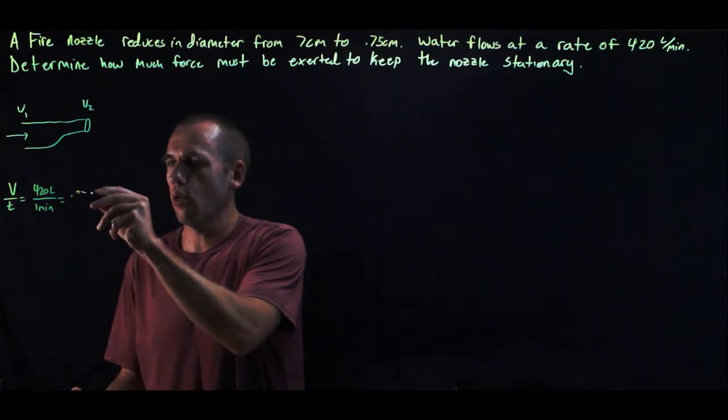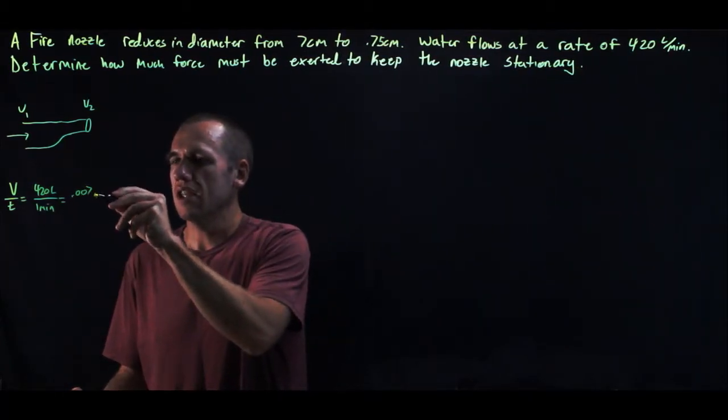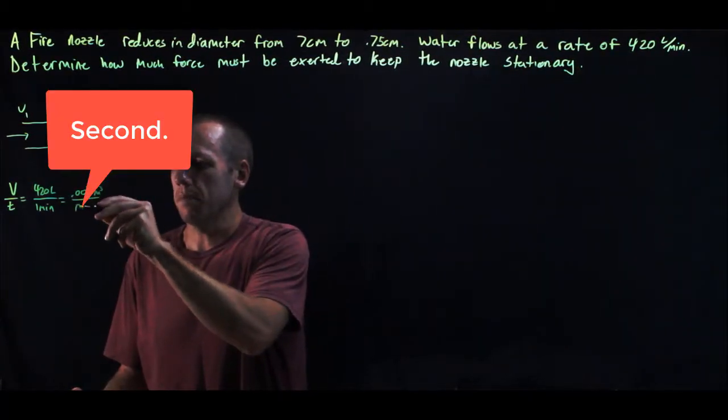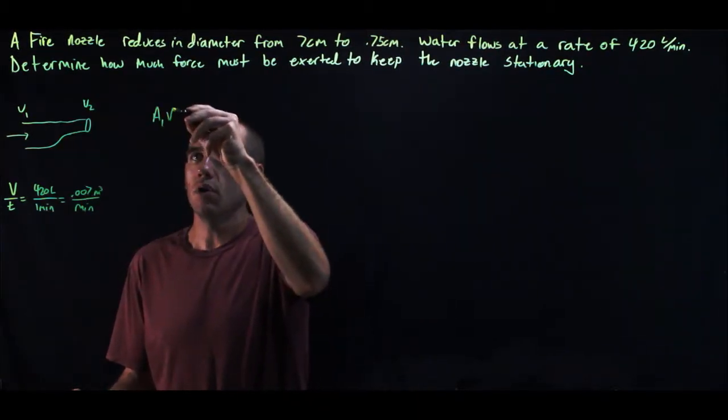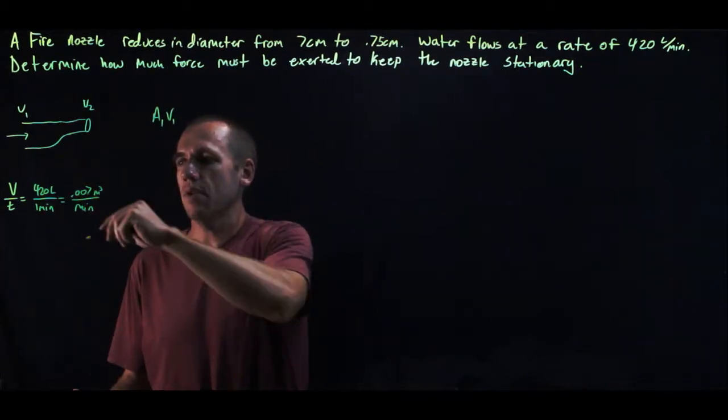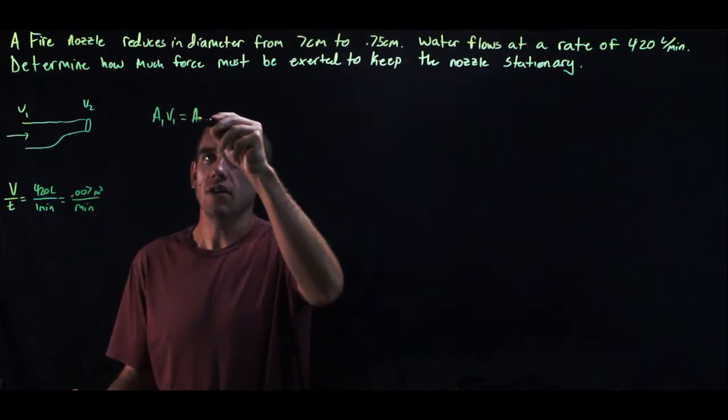This is the same as .007 cubic meters per second. We also know that A1 V1, this is velocity as opposed to volume, equals A2 V2.